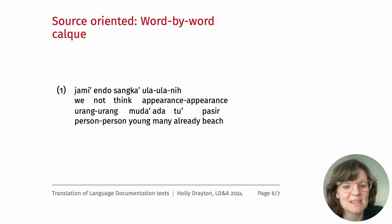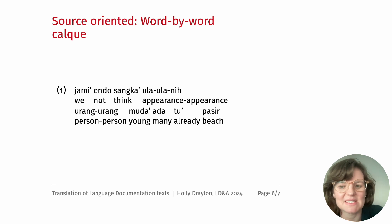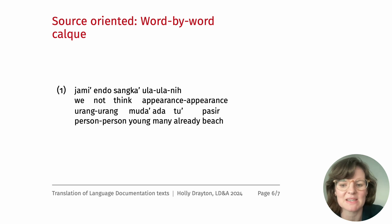On the other hand, here we have an example of a source oriented translation with a word-by-word calc. In this case it's very easy to isolate individual words and understand how to say or how to use a particular word; however, the idiomatic meaning of the translation is quite unclear.